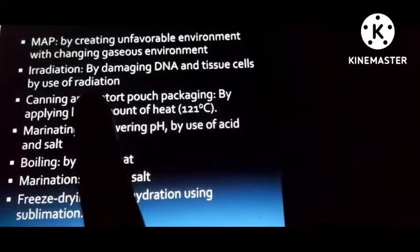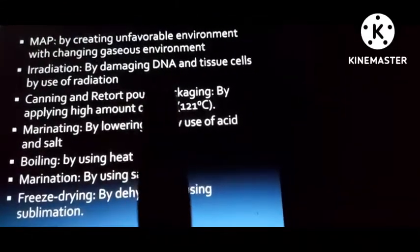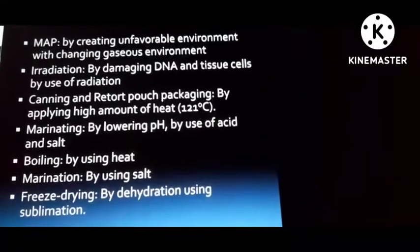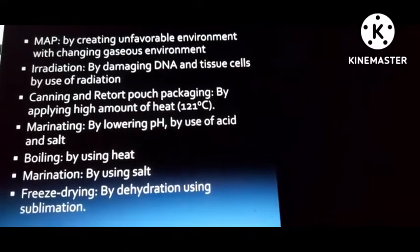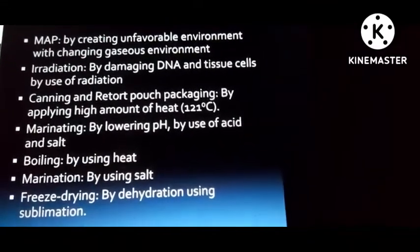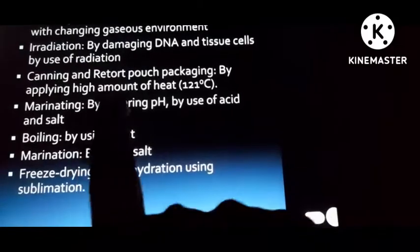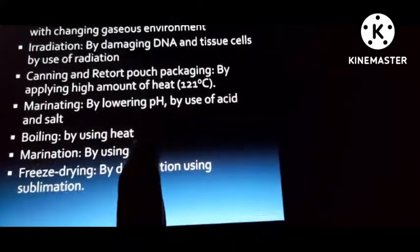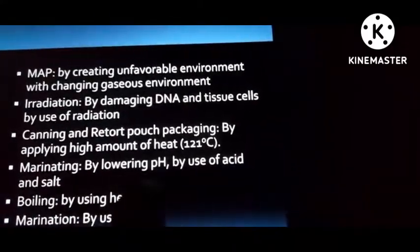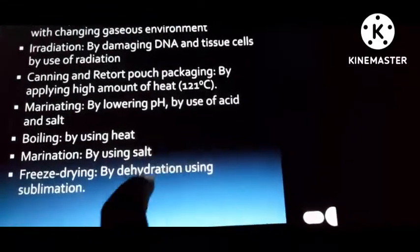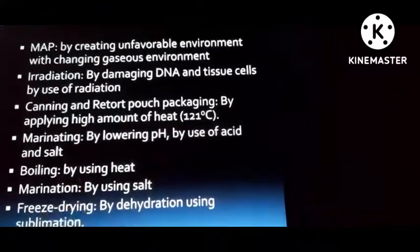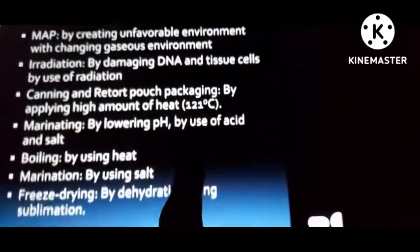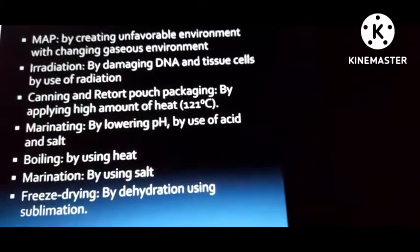MAP (Modified Atmospheric Packaging) works by creating an unfavorable environment through changing the gaseous environment. Irradiation works by damaging DNA and tissue cells using radiation. Canning and retort pouch packaging work by applying a high amount of heat. Marinating works by lowering pH through the use of acid and salt. Other methods include boiling, marination, and freeze drying. These are the methods by which we can preserve fish.